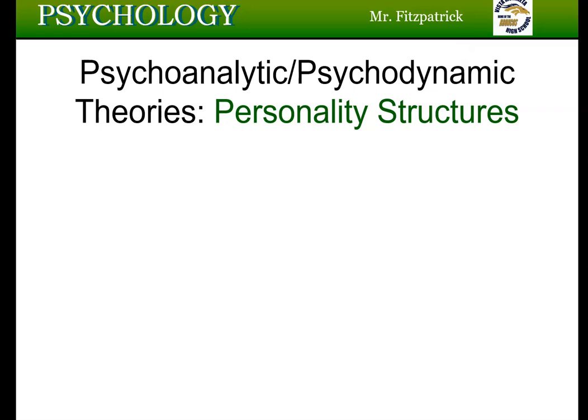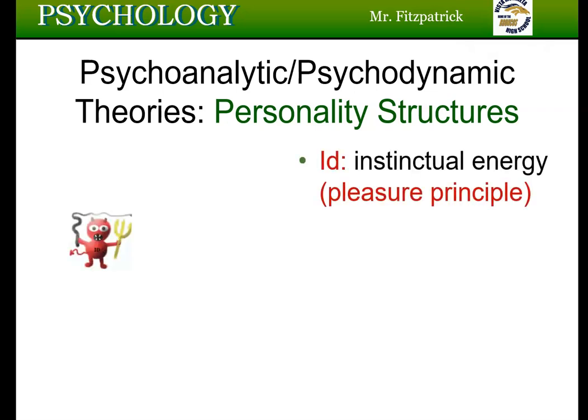Freud also talked about three personality structures — and on a test, there's a difference between the three levels of the mind and the three personality structures. The first is the id, which is all of the instinctual biological urges a person has. It's immature, impulsive, irrational, and totally unconscious. It serves as the reservoir of mental energy. When that energy builds up, the id seeks to gratify it immediately — it operates under the pleasure principle.